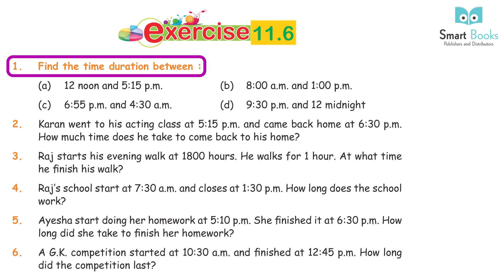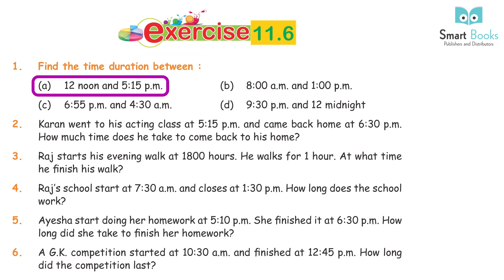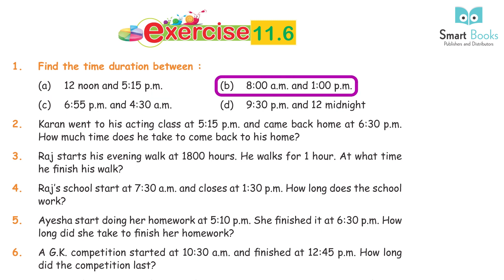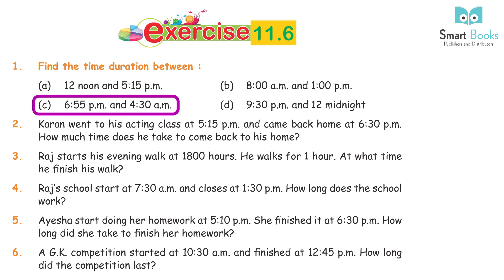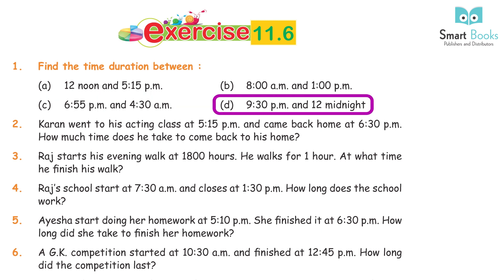Exercise 11.6, Question 1: Find the time duration between: A. 12 noon and 5:15 PM — 5 hours 15 minutes. B. 8 AM and 1 PM — 5 hours. C. 6:55 PM and 4:30 AM — 9 hours 35 minutes. D. 9:30 PM and 12 midnight — 2.5 hours.